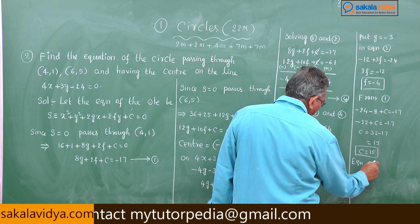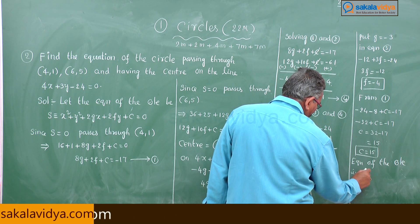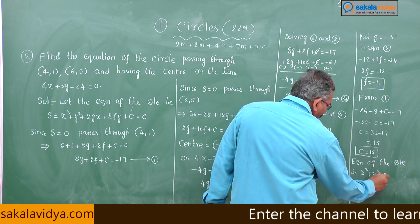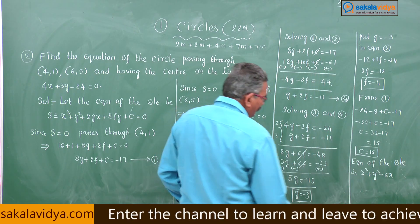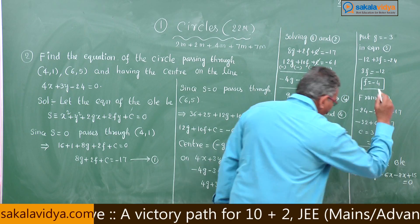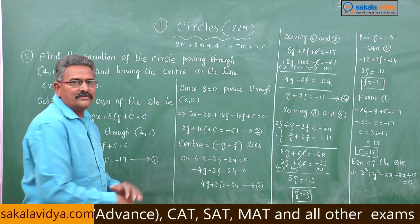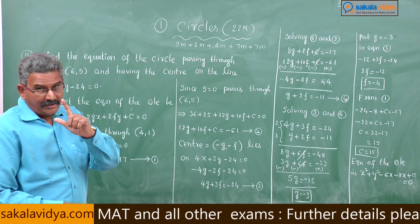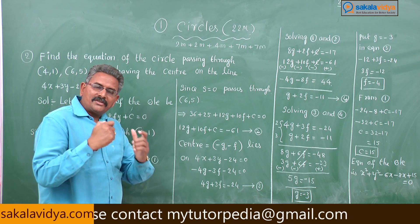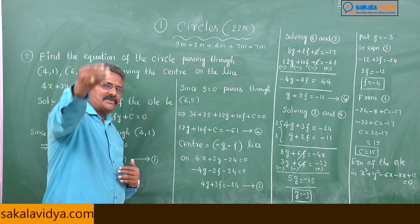Therefore, the equation of the circle is x² + y² - 6x - 8y + 15 = 0. This is a very important problem. After completing one video, watch the next video serially, because the same concepts will be carried forward in the next video.